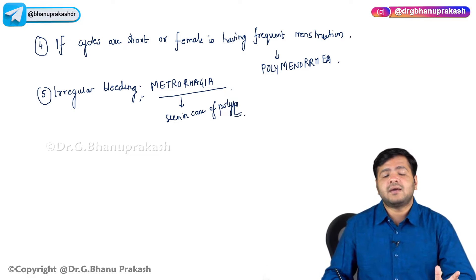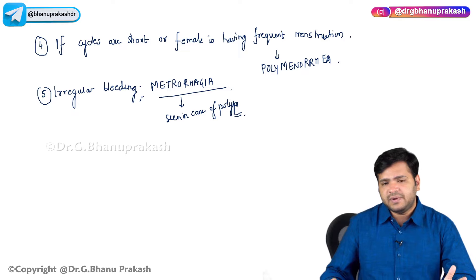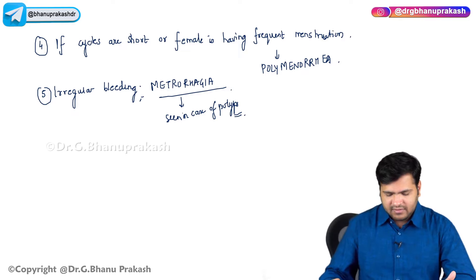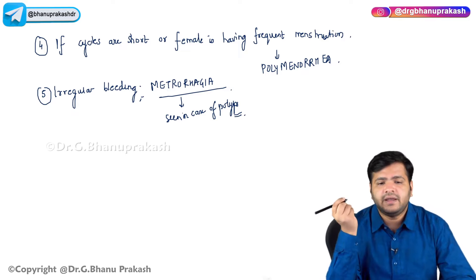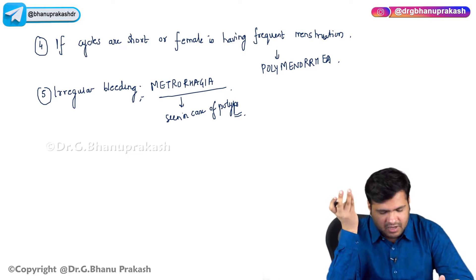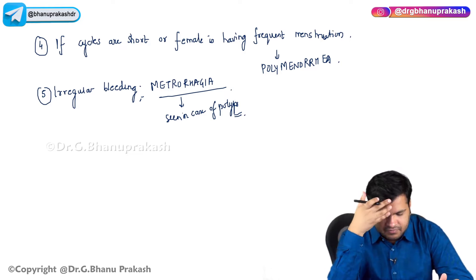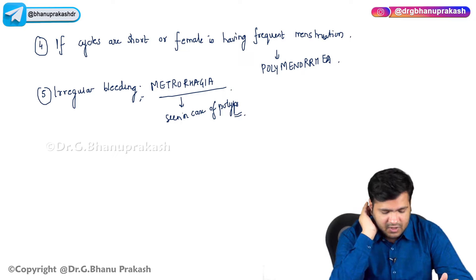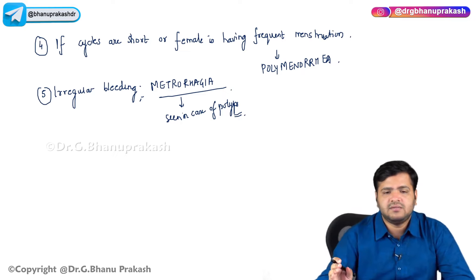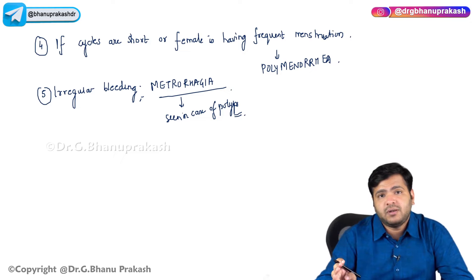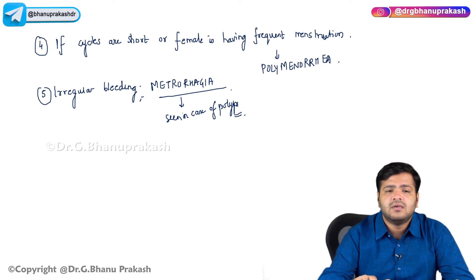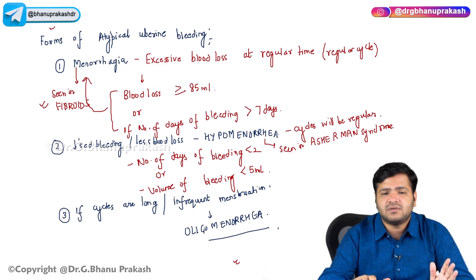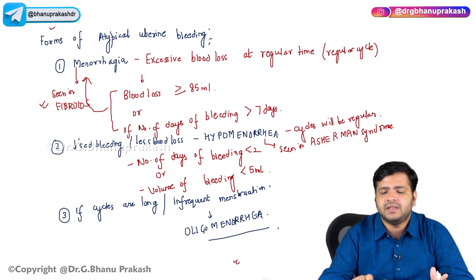If a female is complaining of irregular bleeding at irregular intervals with excessive bleeding, that is menorrhagia combined — menometrorrhagia. Menometrorrhagia is seen in case of fibroids and fibroidal polyps. So, this was about the disorders associated with the menstrual cycle, for the forms of atypical uterine bleeding.